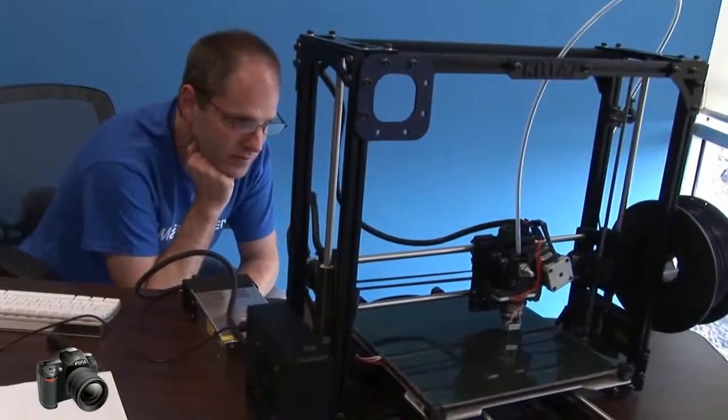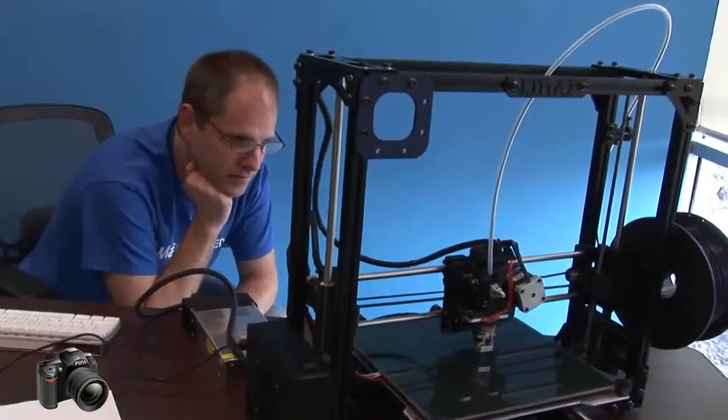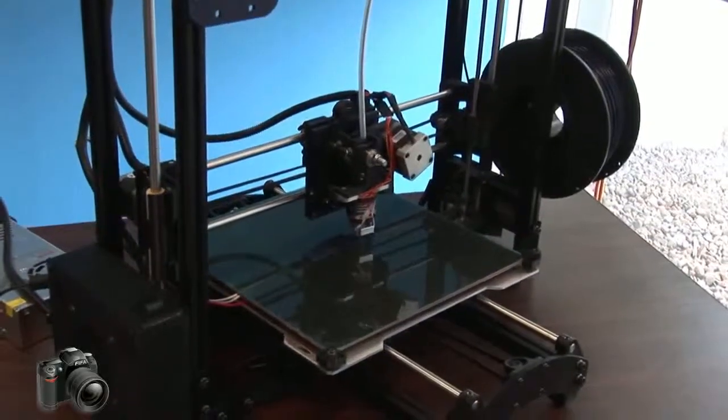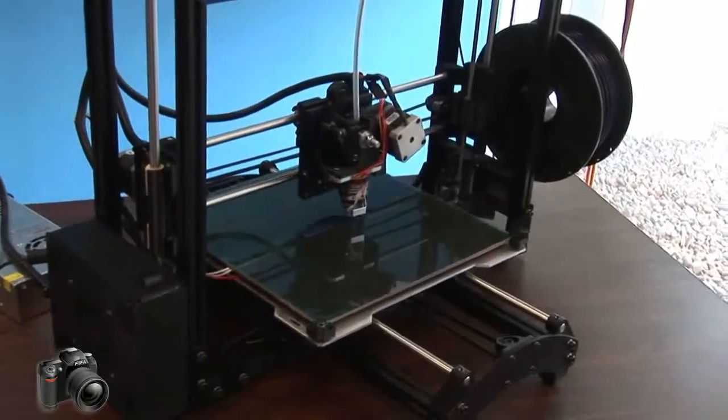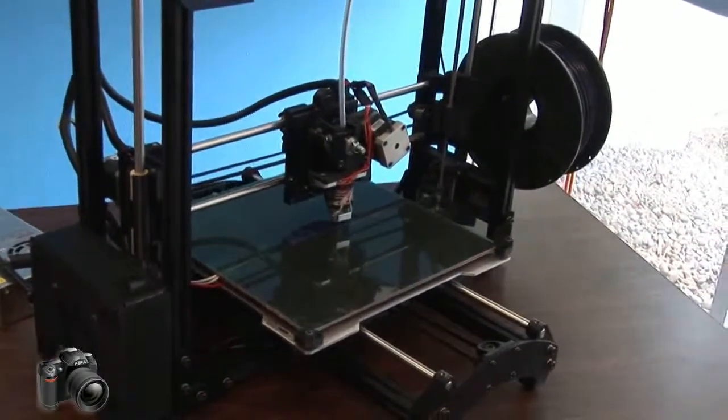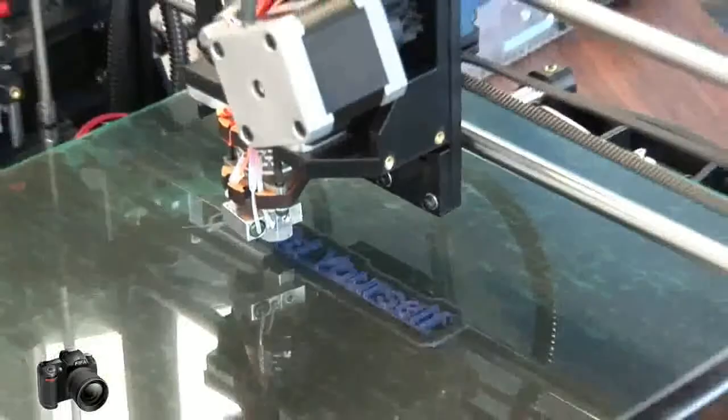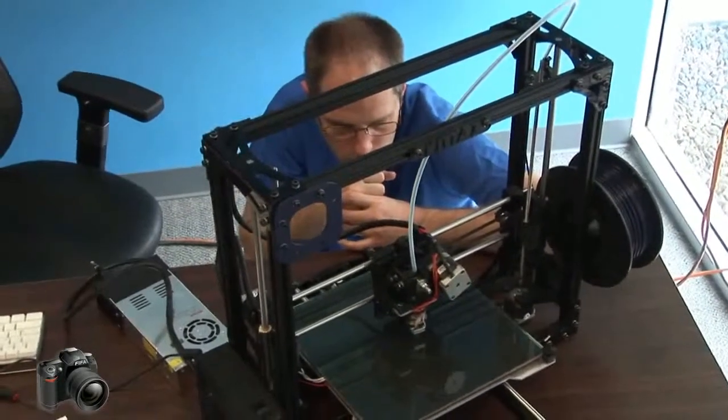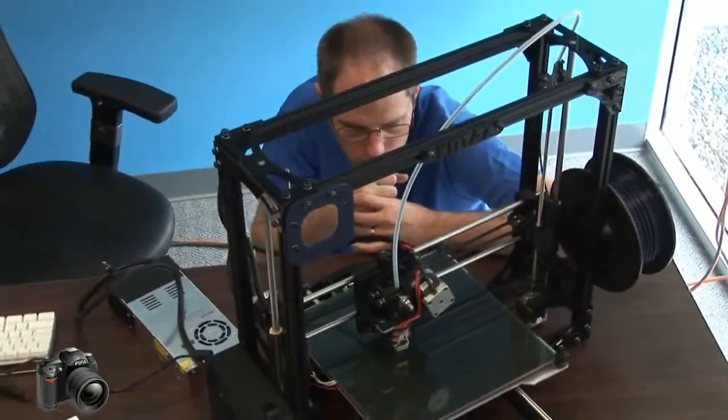The great thing about the kit TAZ is that it has a huge build area for a desktop 3D printer. It's 30 by 30 centimeters, which is significantly larger than the standard size of about 20 by 20 centimeters. It has a heated bed which allows a lot of variety of materials, and it's a very sturdy rigid machine which allows for good accuracy.